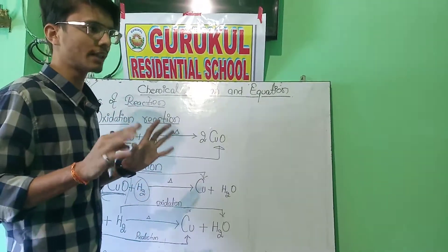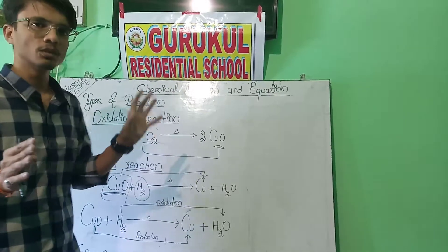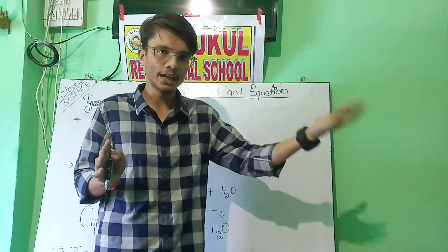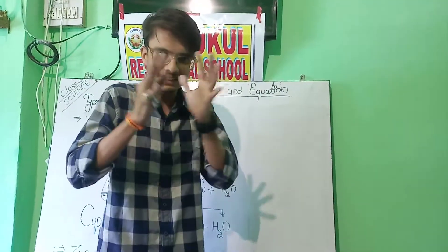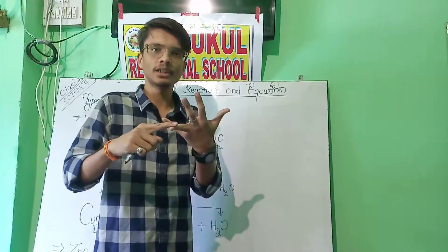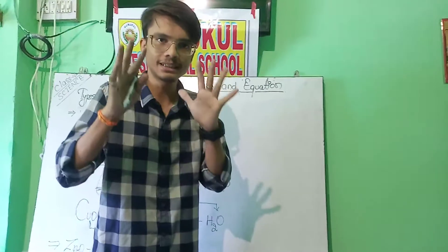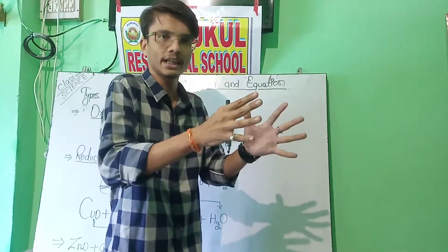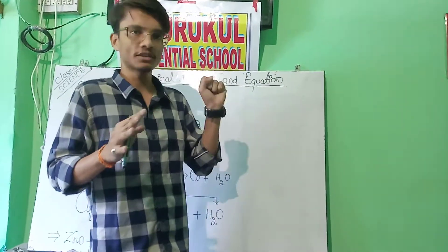First, we have to understand what is an oxidation reaction. Oxidation means when oxygen is combining with a compound, or removal of hydrogen from any compound, or loss of electron. If these three things are happening — combination of oxygen, removal of hydrogen, and loss of electron — in any chemical reaction, then we can say this reaction is a type of oxidation reaction.